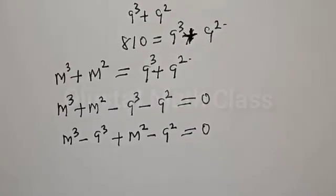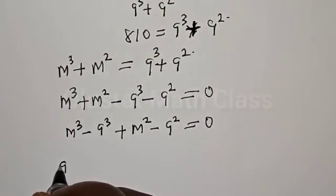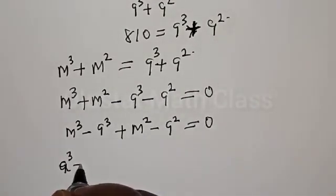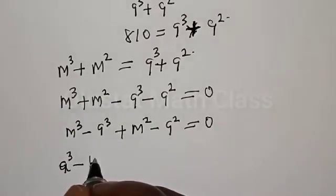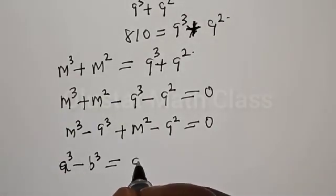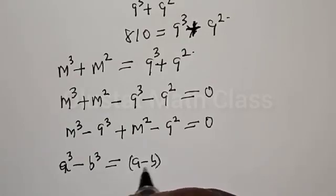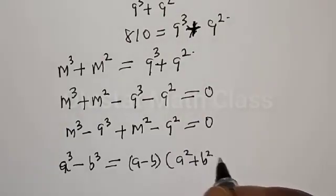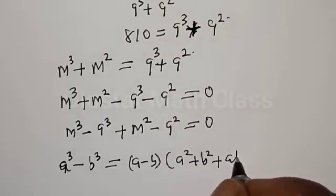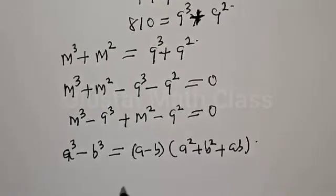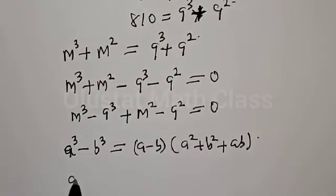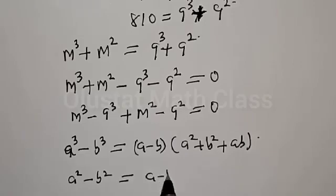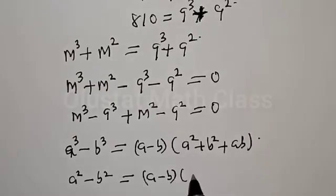Now remember, if you have A cubed minus B cubed, it is the same thing as A minus B multiplied by A squared plus B squared plus AB. Also, if you have A squared minus B squared, it is equal to A minus B multiplied by A plus B.